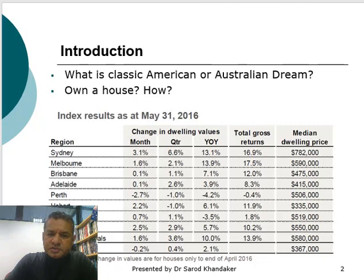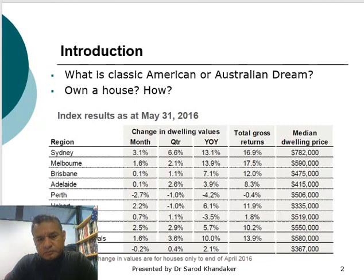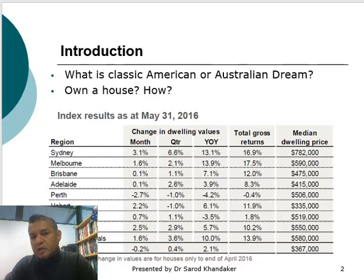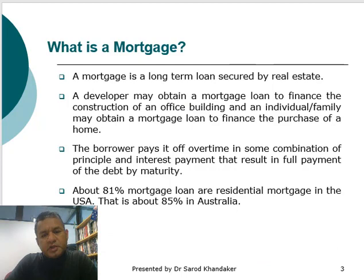This takes us to an important question: what is the Australian dream? If buying a house is part of the Australian dream, how far are we from achieving it? Can an individual buy a house at these prices? The average annual salary after graduation in Australia is approximately $50,000. So how far are we now? Let's talk about mortgage.